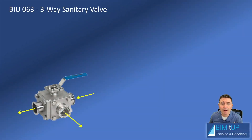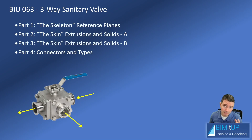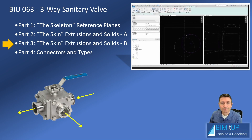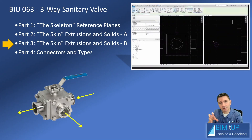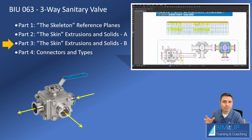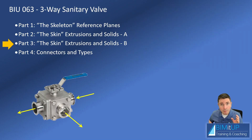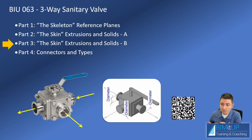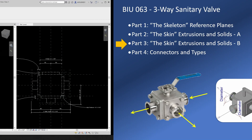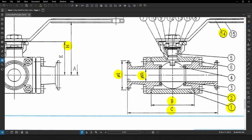Hello everyone, today we're going to continue with how to create a three-way sanitary valve in Revit. If you haven't watched the previous two parts, I recommend you do. This is part three of four. We're continuing with extrusions and solids. In the previous video we created the valve body and the caps, and now we're extruding out towards the connectors and putting the flanges — or more like hubs — there. If you want to download the valve, scan that QR code to go to beamitup.com. Let's get right to it.